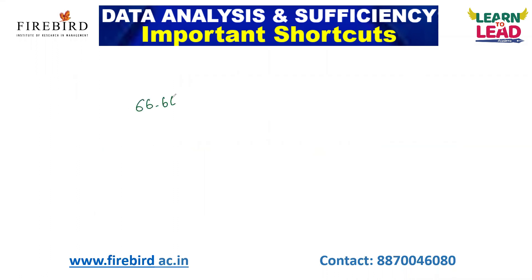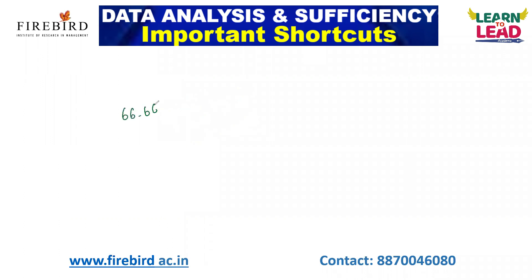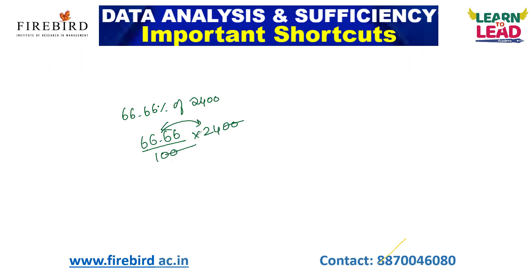If I ask you what is 66.66% of 2,400 — if you do it the normal method, 66.66 divided by 100 into 2,400, you cancel two zeros and have to multiply 66.66 into 24, which is tough. Instead, 66.66% is nothing but 2 by 3. So 2 by 3 into 2,400: 2,400 divided by 3 is 800, times 2 is 1,600. That is your answer.